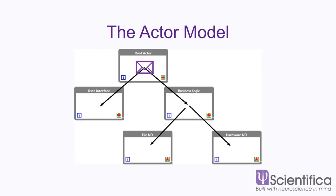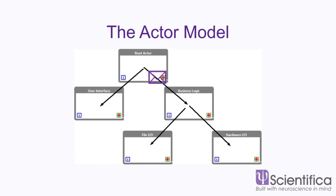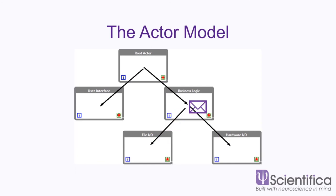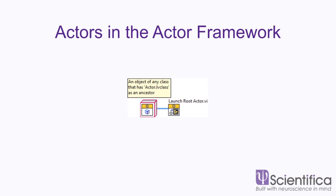I want to separate the user interface completely from all of my business logic — I don't want any coupling there at all. So I launch them separately. That business logic is built up of maybe file I/O and hardware I/O. You can very easily build up this actor tree. It's highly recommended that your messaging systems follow those arrows — you should only send messages up and down the parent-child relationships. We call that communicating with a nested actor or communicating with your calling actor. This allows you to really nicely decouple items. In LabVIEW generally we want low coupling and high cohesion.